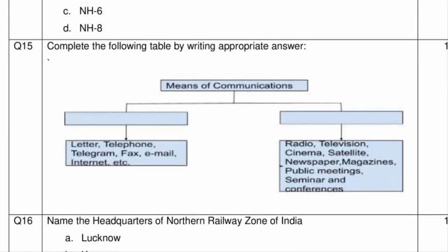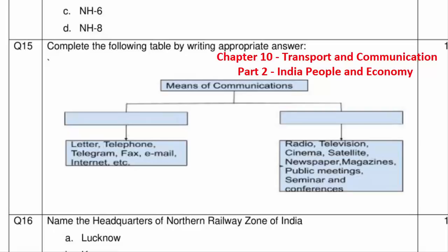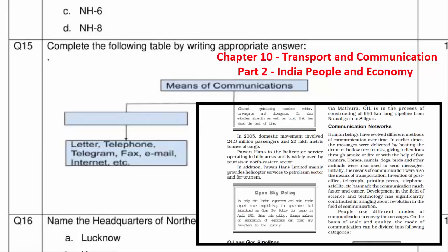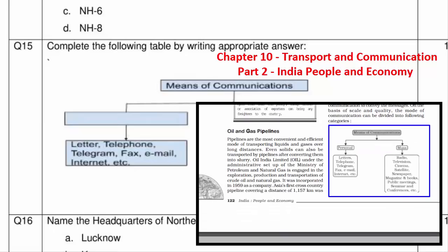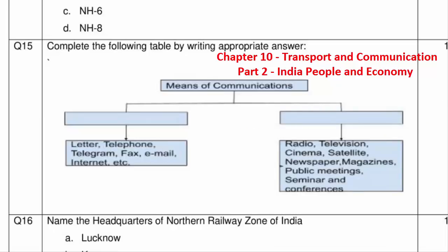Question 15 asks to complete a table by writing the appropriate answer related to communications. This is from Chapter 10 Transport and Communication, Part 2 book. Under the topic Communication Networks, you will find a picture that is the exact copy of the question's table. The answer is Personal Communication and Mass Communication.